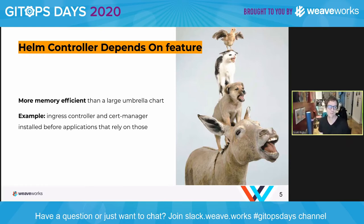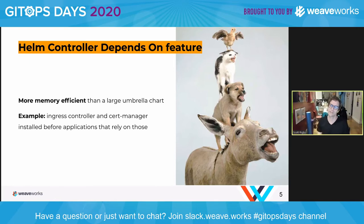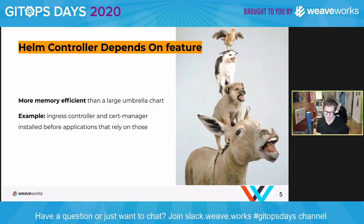Another nice feature of depends-on is that it's more memory efficient than the approach many people have used in the past: making one gigantic umbrella chart that installs all of your dependencies. Helm stores a lot in memory when you have an umbrella chart with all its dependencies, so depends-on really helps keep that a lot lighter.